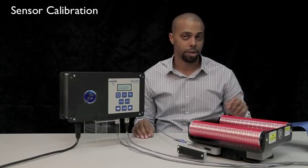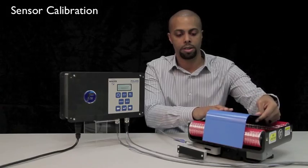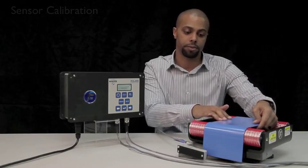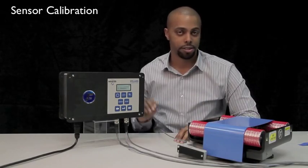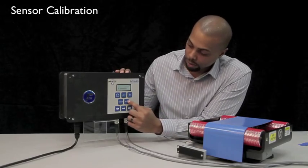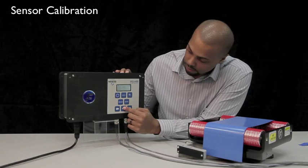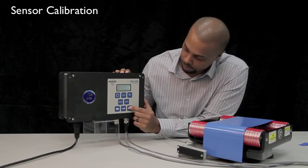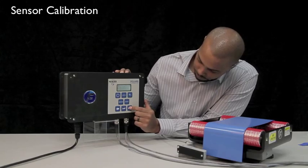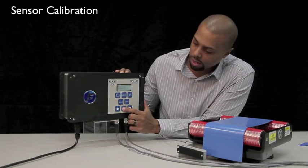We'll now calibrate our edge sensor using this blue metal strip as our material. To calibrate your edge sensor, first press the setup button and press enter to select your basic menus. Then press your right arrow until you see calibration and press enter to select it.